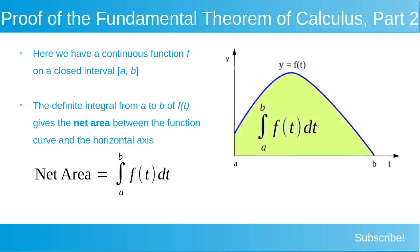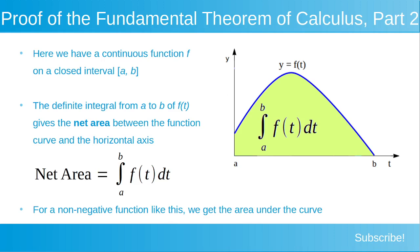If we look at our plot on the right-hand side of the screen, we can calculate that net area, shaded in green, as being equal to the integral from a to b of f dt. For a non-negative function like this, we get the area under the curve.